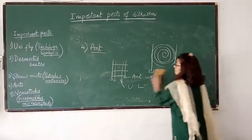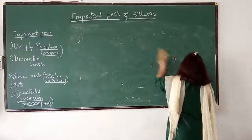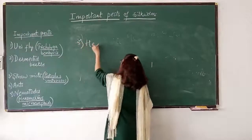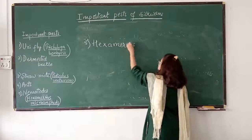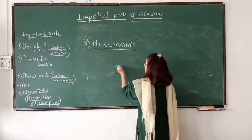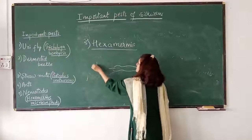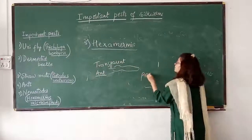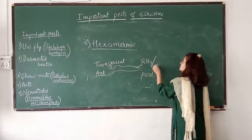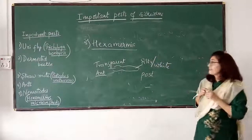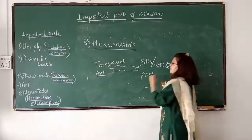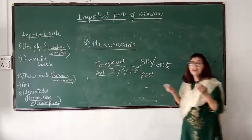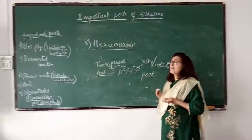The next pest is nematodes. Many nematodes infect silkworm larvae, and the one being discussed here is Hexamermis. When the larva is infected by Hexamermis, the anterior region becomes transparent and the posterior region becomes grey or white, due to the presence of nematodes inside the body. After a few days, the nematodes pierce or rupture the skin, come out of the body, and the larva dies. These are some of the most important pests of silkworm.